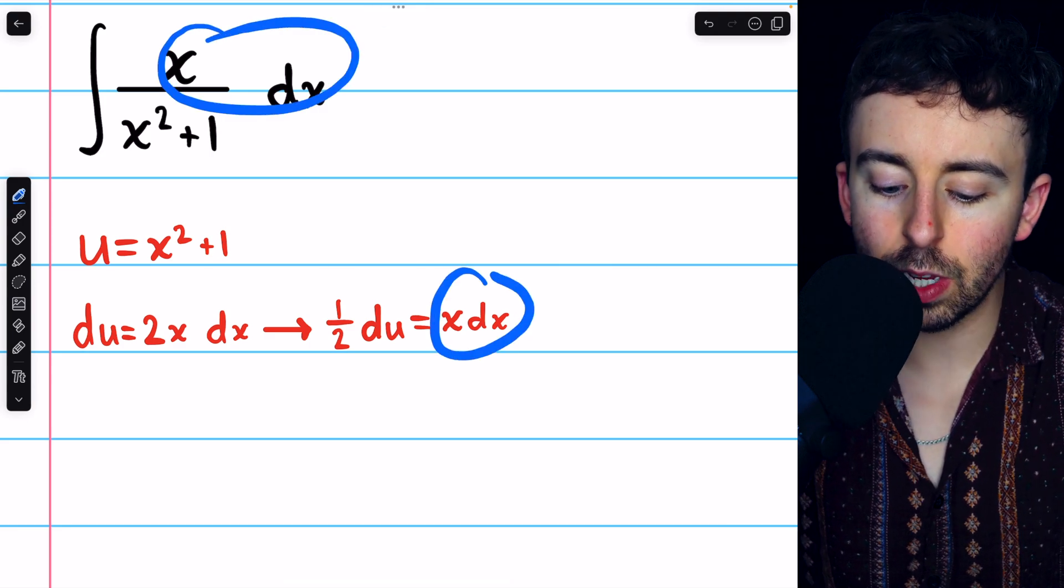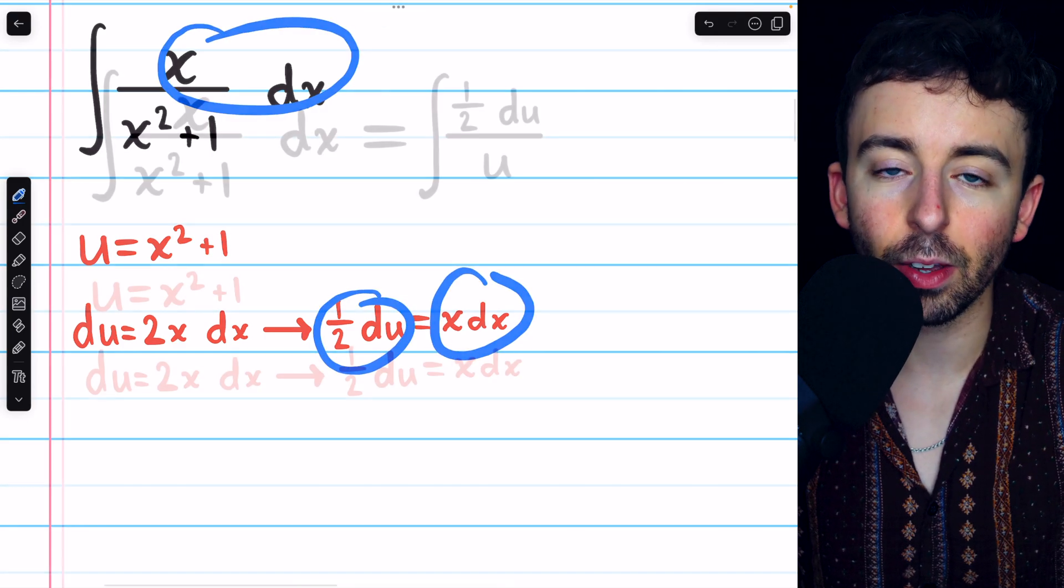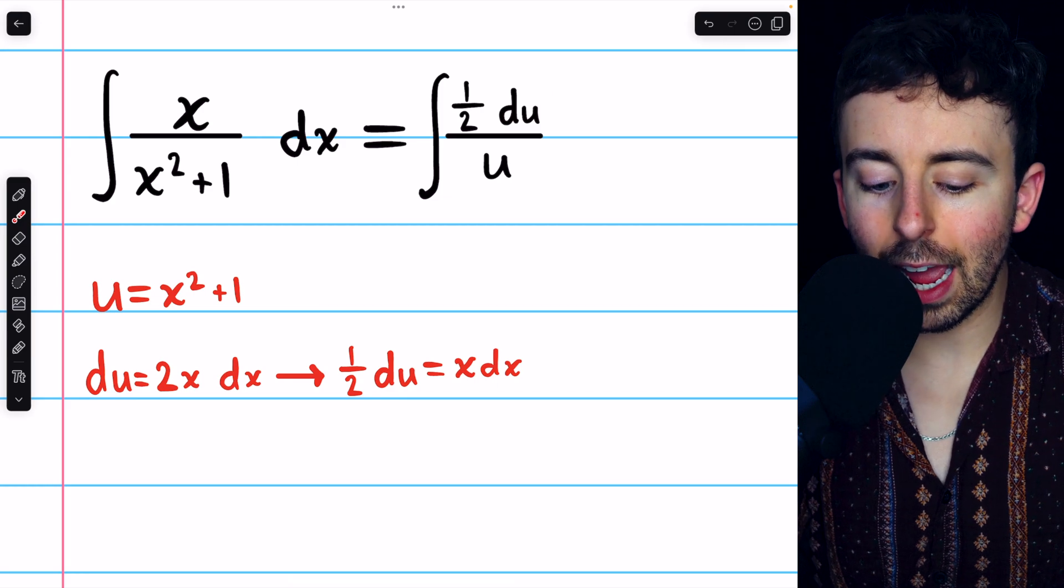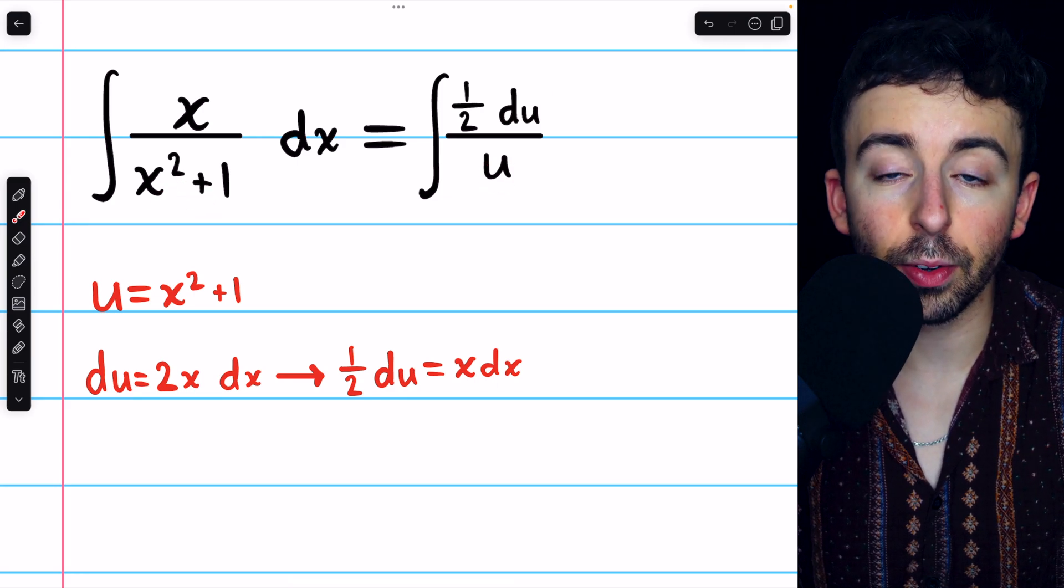So now x dx, we can replace with 1 half du. That's 1 half du, and x squared plus 1, of course, we replace with u.